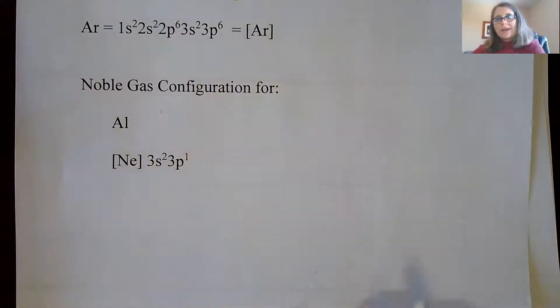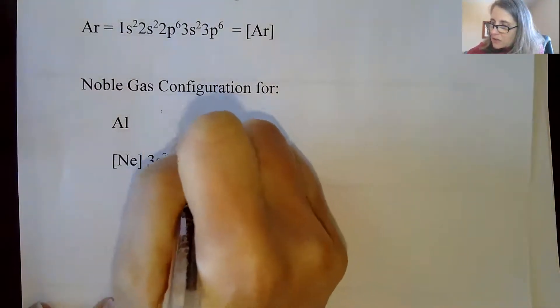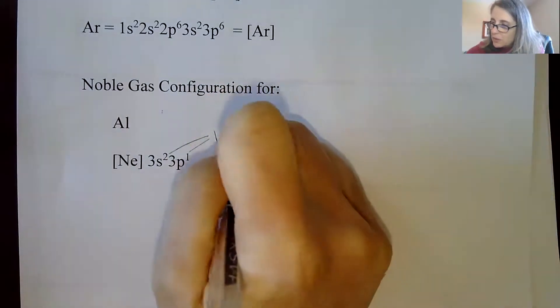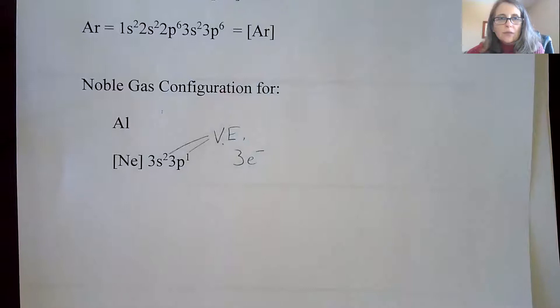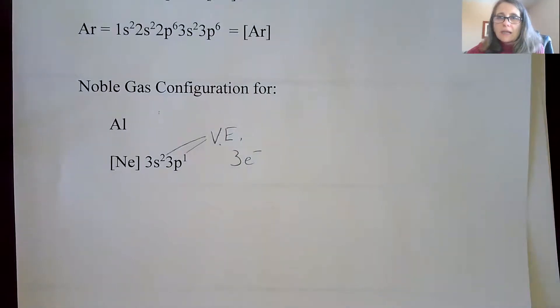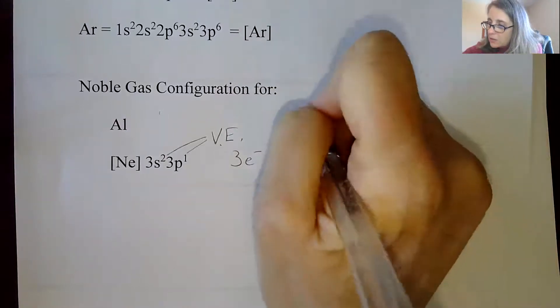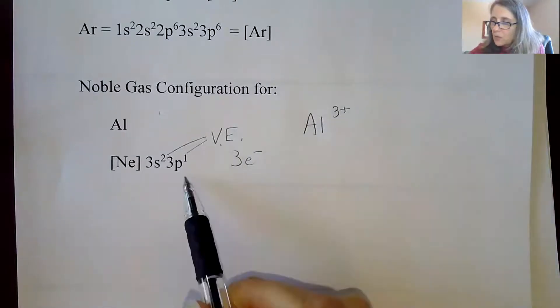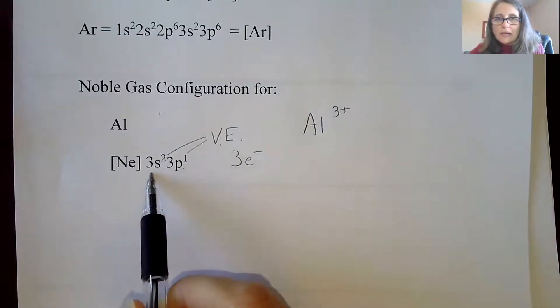So all we care about as chemists is what we call the valence electrons. So these are the valence electrons for aluminum. There are a total of three valence electrons for aluminum. That is going to dictate a lot of its chemistry, what it wants to do. And one thing aluminum wants to do is it wants to become a cation, it wants to become a 3+ ion. Well, where are those electrons going to come from? Well, one of them is going to come from the 3p and two of them are going to come from the 3s.